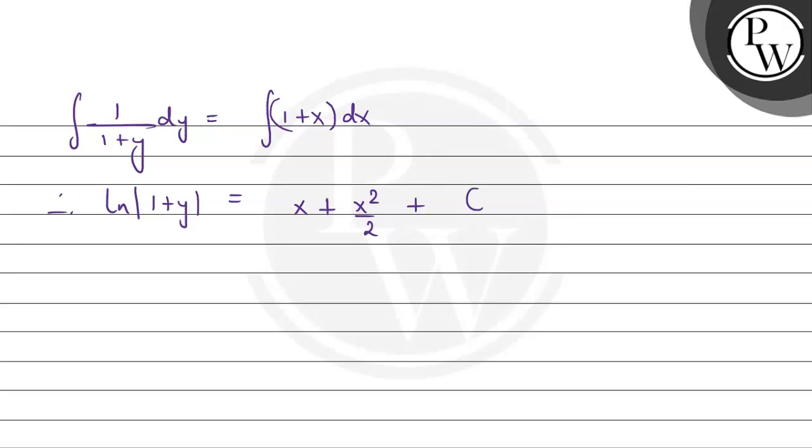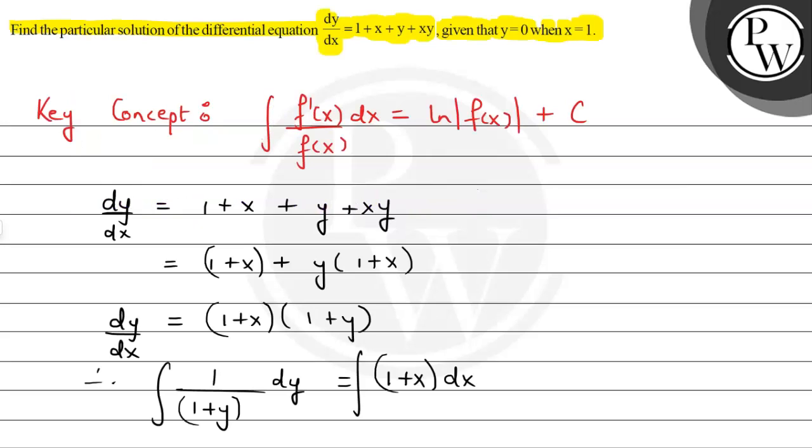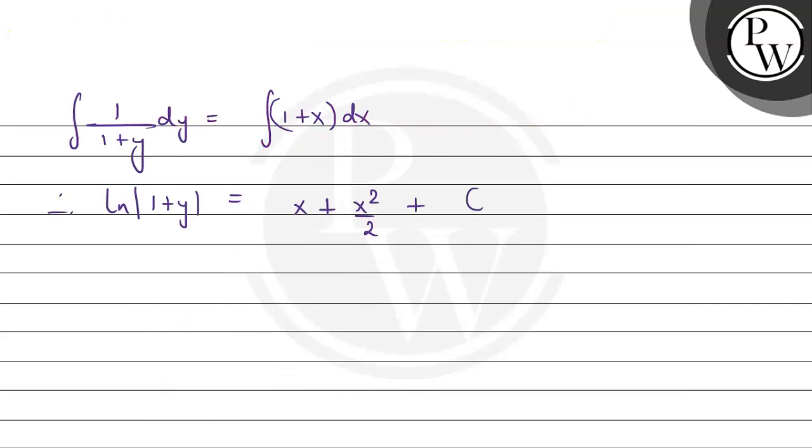Now to get the value of C, we will use the initial condition given in the question: y = 0 when x = 1.